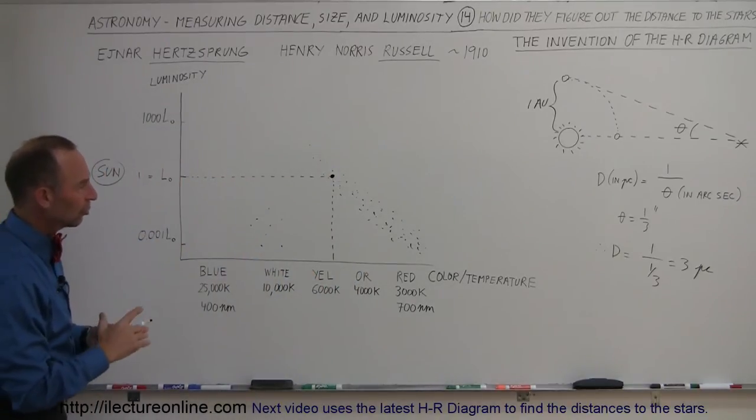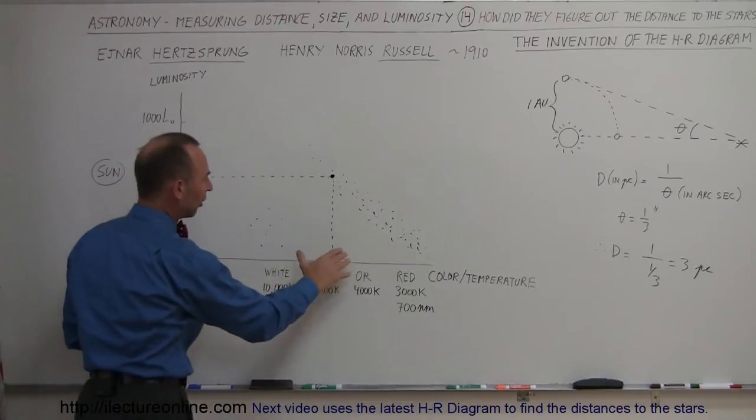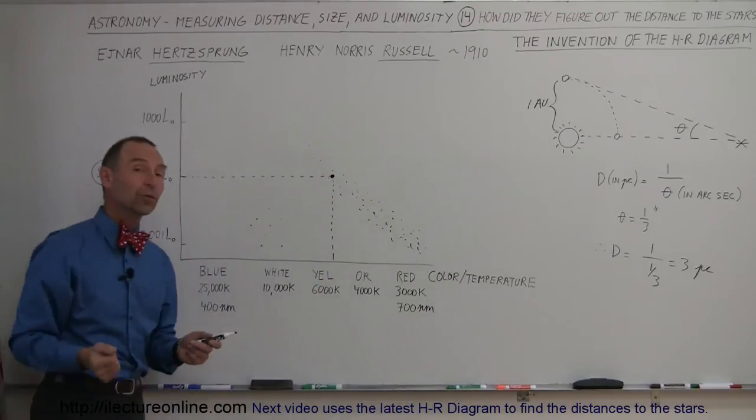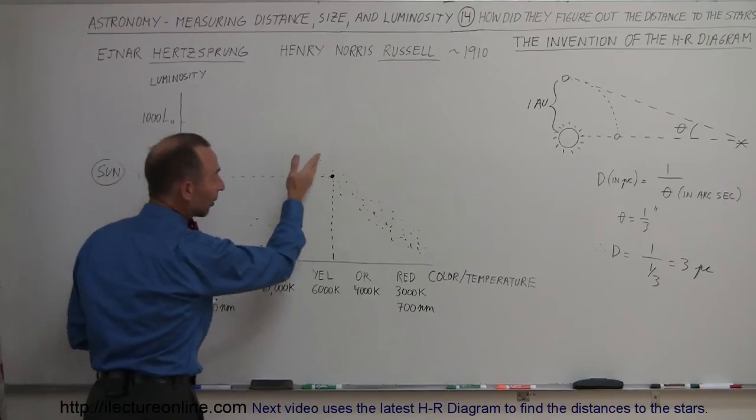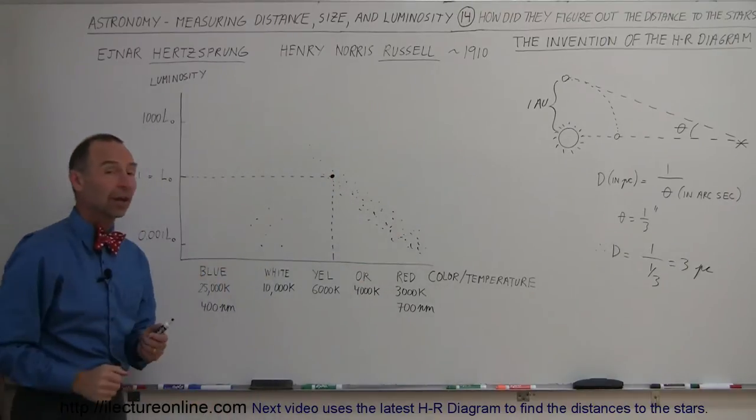That's kind of interesting, so that shows that of the 100 nearest stars, the sun was one of the brightest of those 100. There were only about 5 or 6 stars that were brighter than the sun, and all the other stars were less bright than the sun.